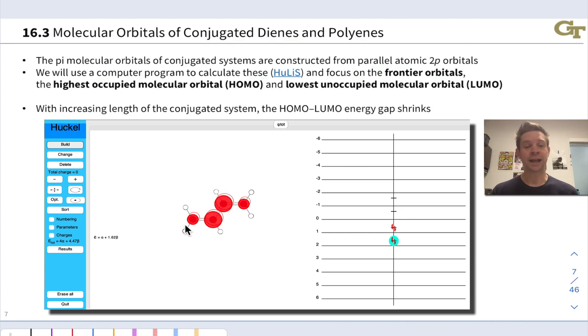At the lowest energy, we have no nodes at all. All of the p orbitals are lined up in phase. The highest occupied molecular orbital here has one node between carbons 2 and 3, and the lowest unoccupied molecular orbital has two nodes. We see this pattern of the number of nodes increasing as we go to higher pi molecular orbital energies.